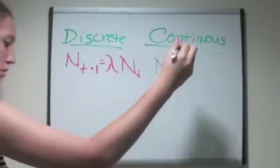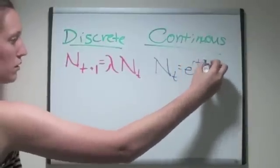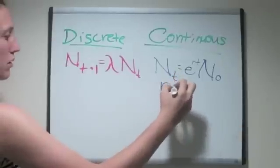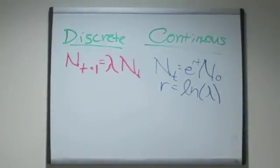In these equations, n is population size, n sub t is population size at time t, and lambda is the discrete or finite growth rate. The natural log of lambda, or r, equals the intrinsic growth rate, or instantaneous growth rate.